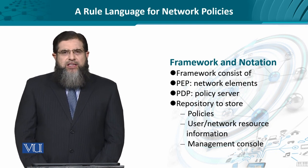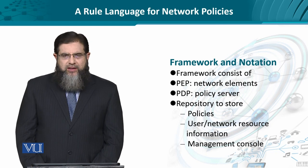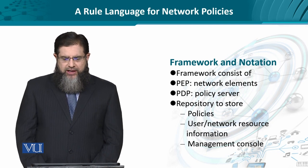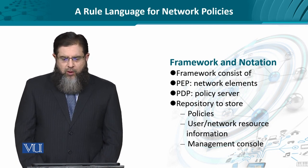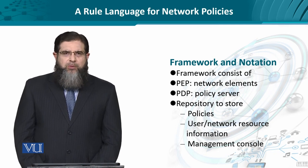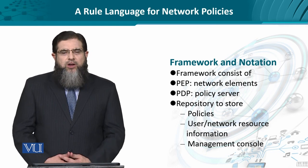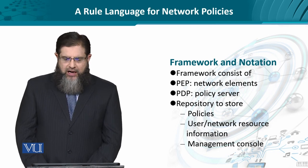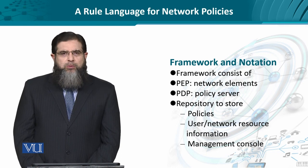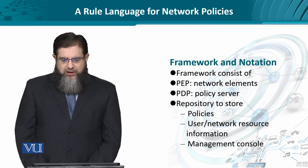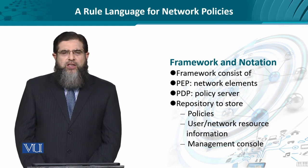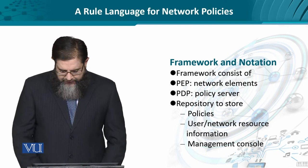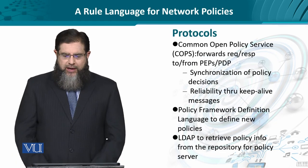Policy-based network management is primarily based on a framework comprising various entities: the policy enforcement point, the policy decision point, and the repository. The policy enforcement point is the network element that takes policies from the policy decision point. The policy decision point assesses which policy is most suitable to retrieve from the repository, considering the user profile, network resources, overall specifications, and user input from the management console.